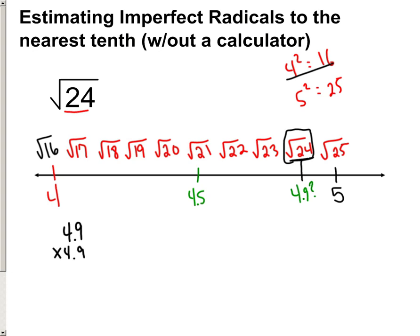I'm expecting you to be able to do all of this without a calculator, and I don't think you need to see me work out 4.9 times 4.9, so I'm just going to write down the answer: 24.01. Now, as soon as you get this answer, we're hoping it's going to be as close to 24 as possible. It's not going to be exact, but we're hoping as close as possible. There are going to be one of two options — it's going to be too high or too low — and this one is too high.